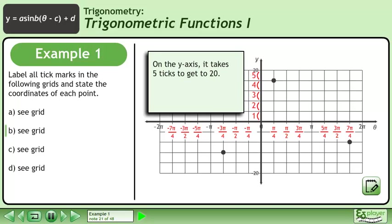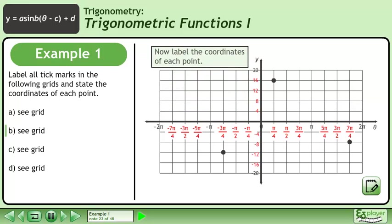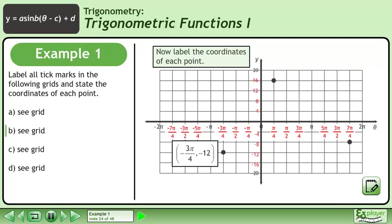On the y-axis, it takes 5 ticks to get to 20. 20 divided by 5 equals 4, so the ticks are spaced 4 units apart. Now label the coordinates of each point. The first point is located at negative 3pi over 4, negative 12. The second point is located at pi over 4, 16. And finally, the third point is located at 7pi over 4, negative 8.